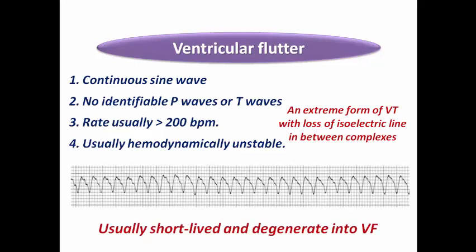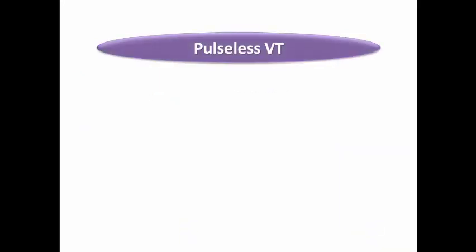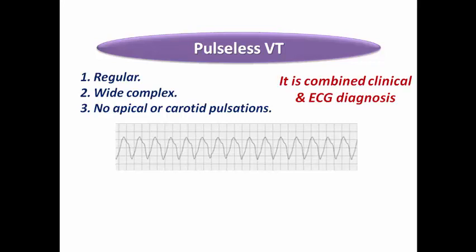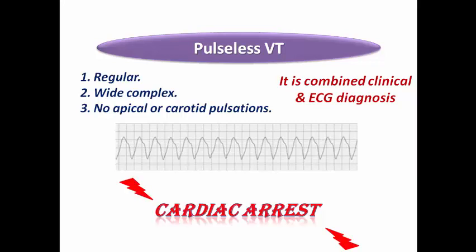Ventricular flutter describes a VT with a continuous sine wave pattern and no identifiable P or T waves, with rate usually exceeding 200 beats per minute, making the patient hemodynamically unstable. It is an extreme form of VT with loss of the isoelectric line between complexes — similar to atrial flutter — and may degenerate easily into VF. Pulseless VT is a regular wide-complex tachycardia without apical or carotid pulsation, requiring immediate defibrillation.